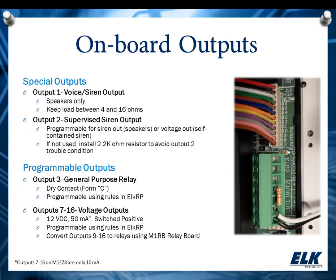Let's start by talking about the outputs you'll find on board. What you see here in this picture is an M1 Gold. The M1 Gold has a couple of special outputs: Output 1 and Output 2. Those have predetermined functions — they're your voice siren outputs and also a supervised siren output. The EZ-8 has Output 2 but does not have Output 1. Output 1 is speakers only; keep the load between 4 and 16 ohms. Output 2 is supervised and can be programmed for speakers or self-contained sirens. If it's not used, you need a 2.2K resistor across it.